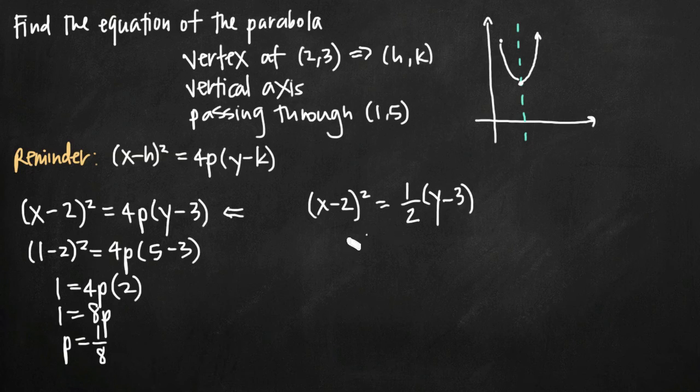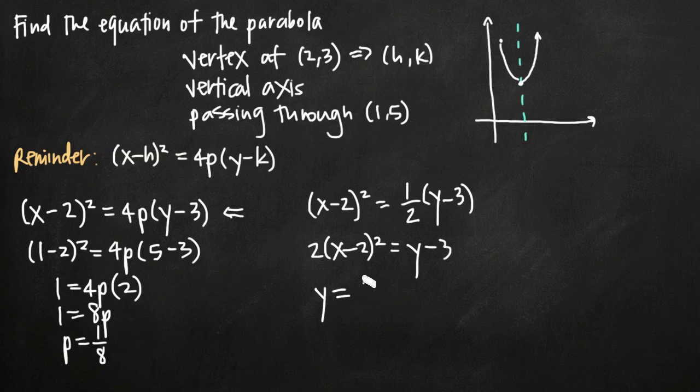So if we want to do that, we can multiply both sides by 2. So what we get is 2(x-2)² = y-3. Multiplying both sides by 2 gets rid of the 1/2 here. And then if we add 3 to both sides, what we're left with is just y = 2(x-2)² + 3.